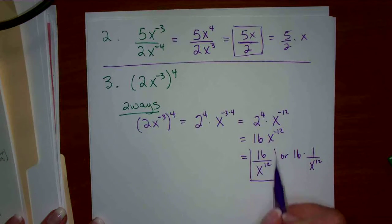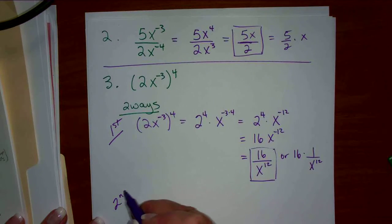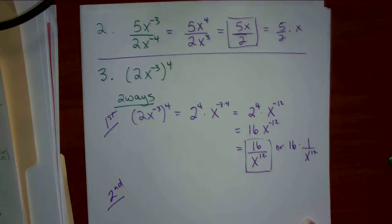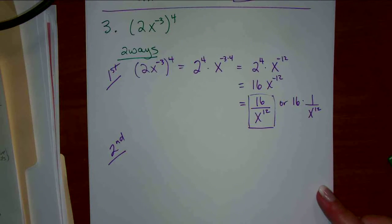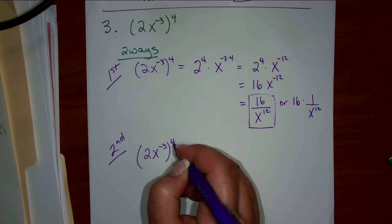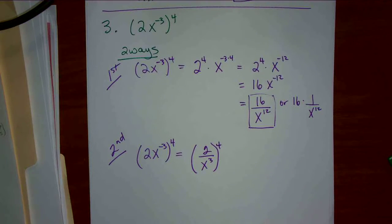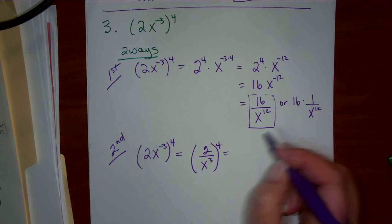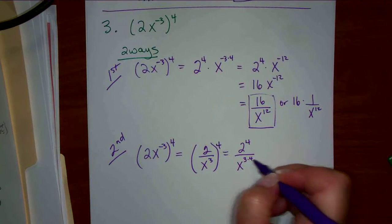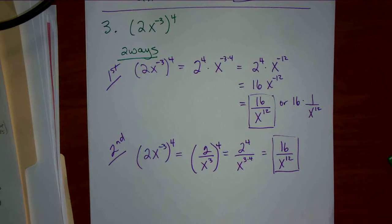The second way we could have done this: get rid of the negative exponent first. So this would be written as 2 over x cubed all to the 4. Either way is okay — apply the exponent first or deal with the negative first. So this is 2 to the 4 over x to the 3 times 4. Those are the two ways you could do that.